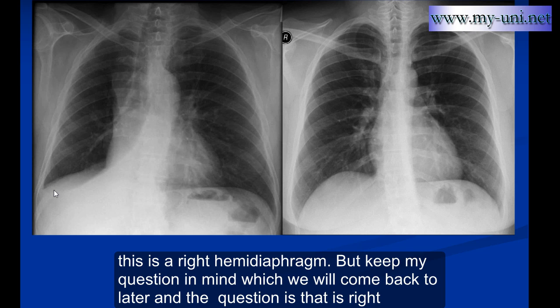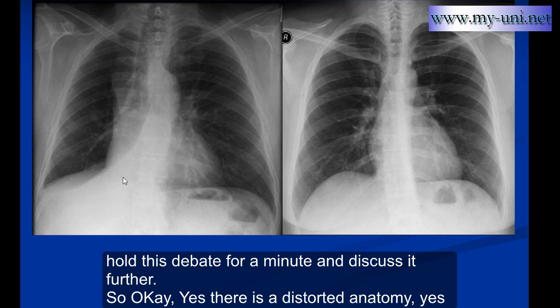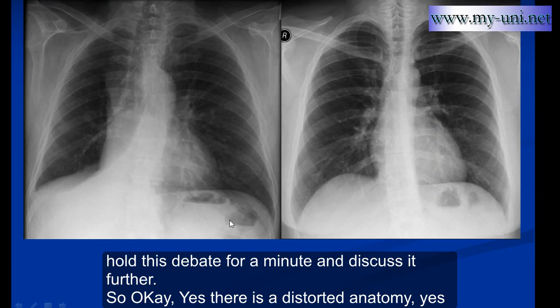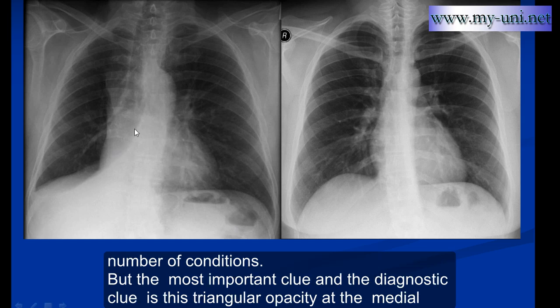Keep this question in mind — we will come back to it later. The question is whether the right hemidiaphragm is really visible. Most people would say yes, this is the right hemidiaphragm, and it looks raised but it is there. Let's hold that debate for a minute. There is distorted anatomy, loss of right lung volume, and the diaphragm is raised, but most features are inconclusive as they can be present in a number of conditions. The most important and diagnostic clue is this triangular opacity at the medial basal part of the right lung.